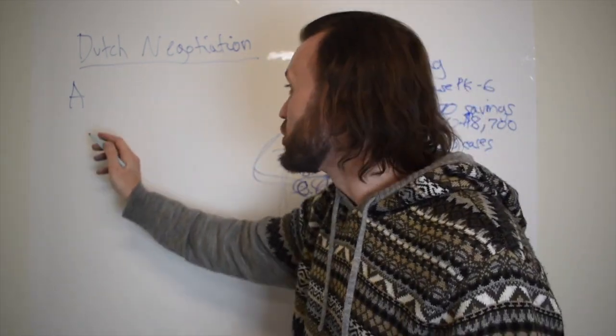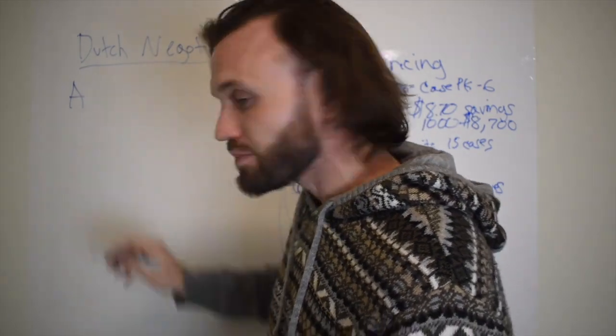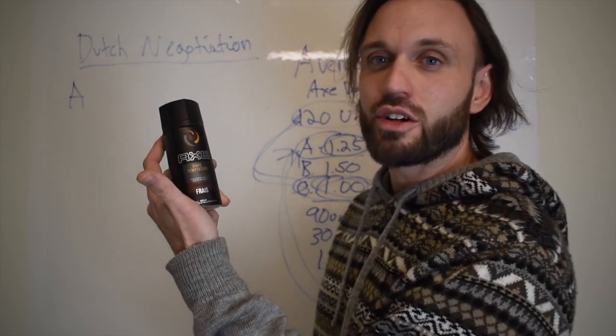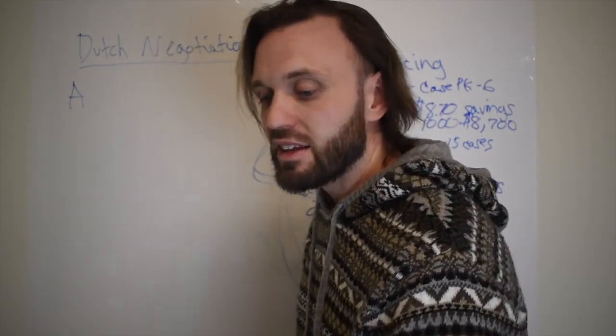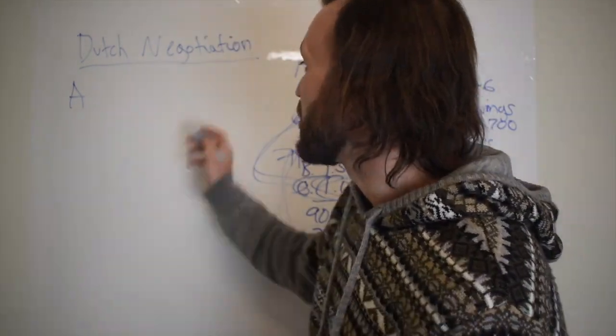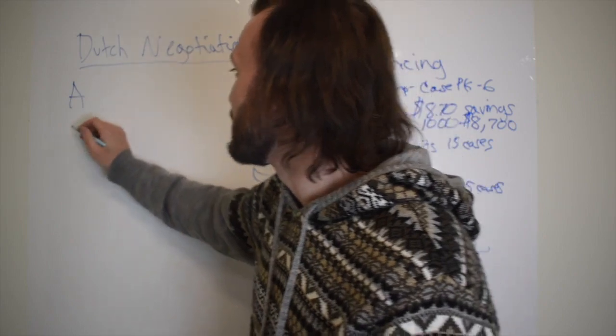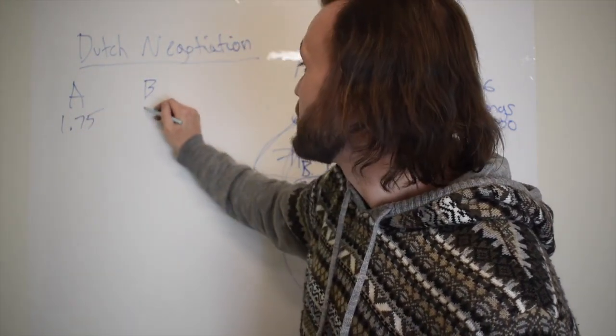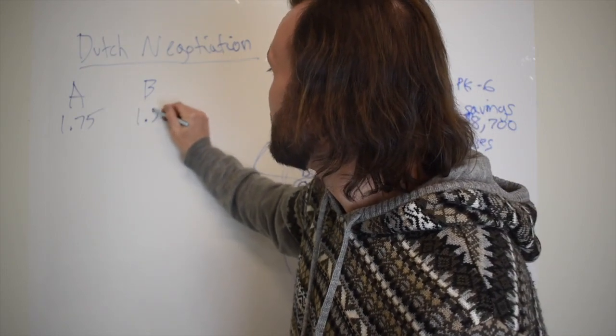So let's say distributor A has the same product—this Axe Dark Temptation. We're going to go back to this. Let's say distributor A has this product, they're going to be a little more expensive. We're going to say they have it for $1.75, and distributor B has this product for $1.50.